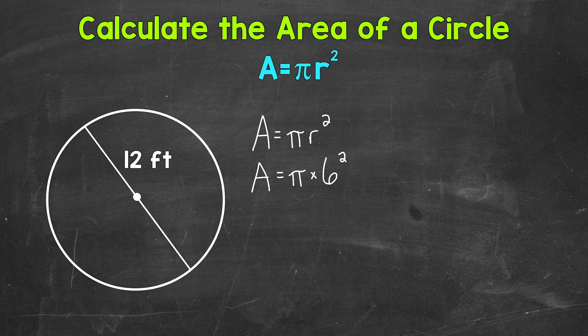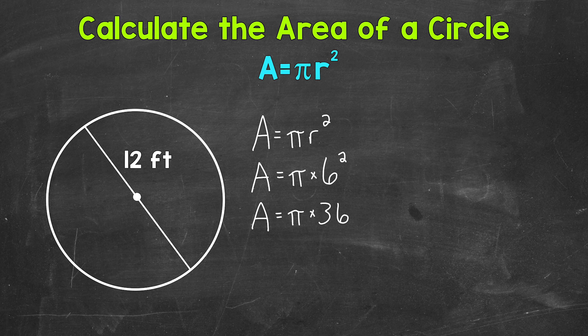Now 6 squared means 6 times 6, not 6 times 2. When we square a number, we multiply that number by itself. So 6 squared gives us 6 times 6, which equals 36. So we end up with pi times 36.